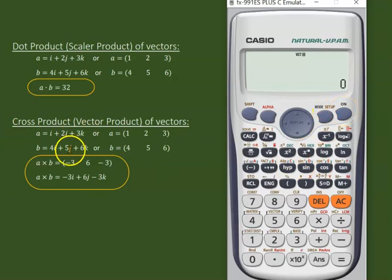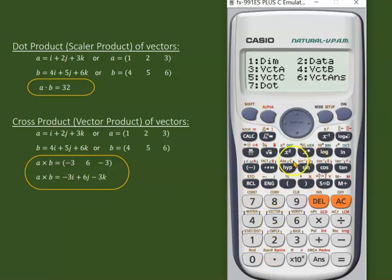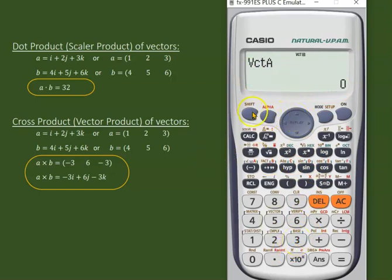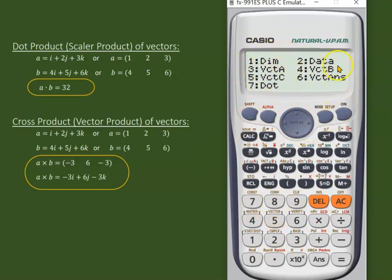Let's go for the cross product. Vector a and vector b, I am using the same vectors, so I am not going to feed them again. So just go to vectors format and vector a, which comes as an option. This time we do not have an option for vector product here.